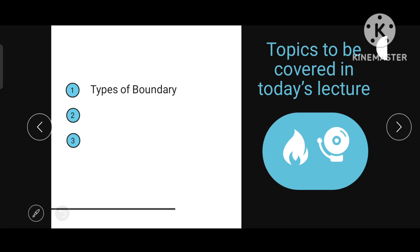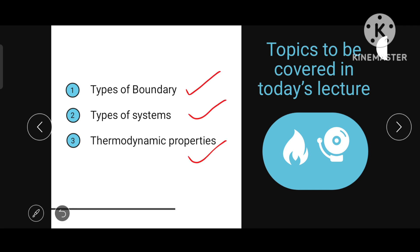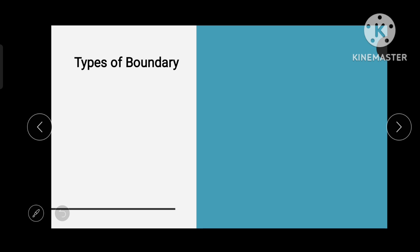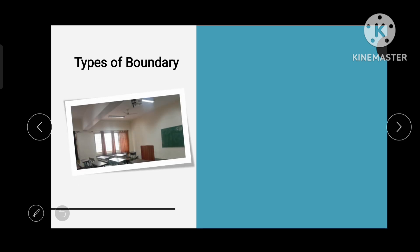Today we are going to discuss the types of boundaries, the types of systems, and thermodynamic properties — these three topics. Now we will see the types of boundaries. The definition of boundary from the previous class is: the thing which separates the system from the surrounding. I want to explain these types of boundary with an example. The boundary can be classified into two types.